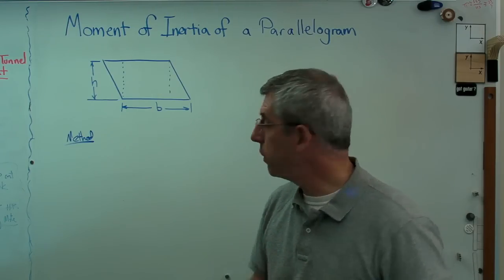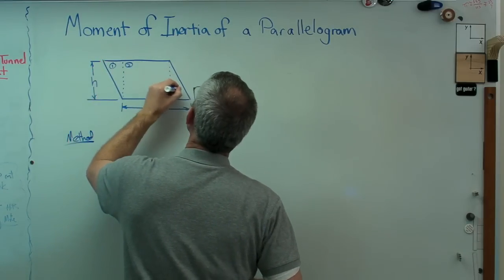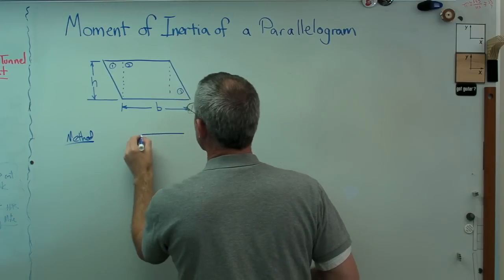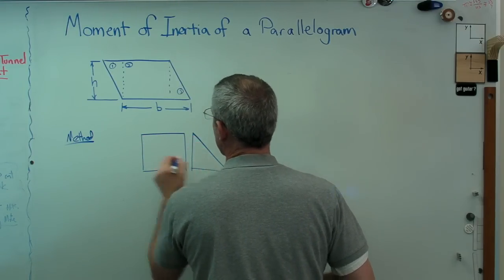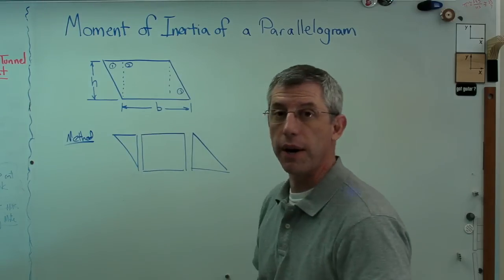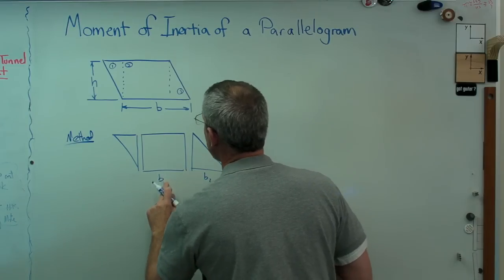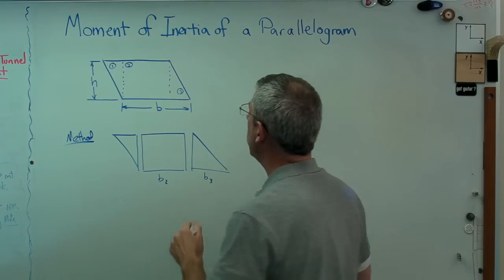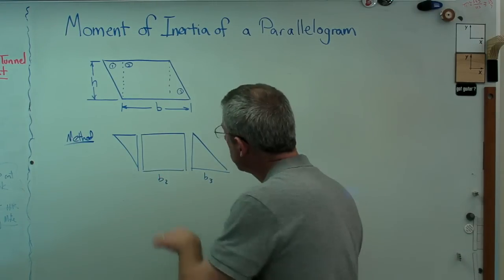I'm going to call that part one, that part two, and that part three. I'm going to draw those separately here - there's part two, part three. I'm going to call this b1 and that b2, about I should call that b2 and b3, shouldn't I? b2 and b3. And h doesn't change.